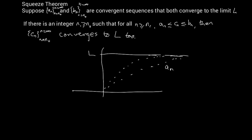...also seems to be converging to L. Then if we have c_n — shown in red — it can go up and down, it can do anything, but it has to be between a_n and b_n. This is b_n. So the c_n, the red one, is squeezed between b_n and a_n. Then what is the only possible result? It will obviously also go to the same limit L.